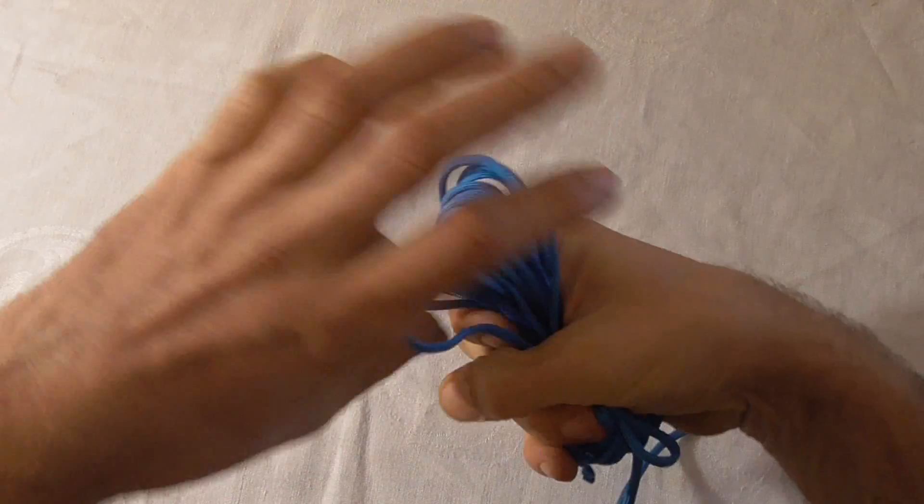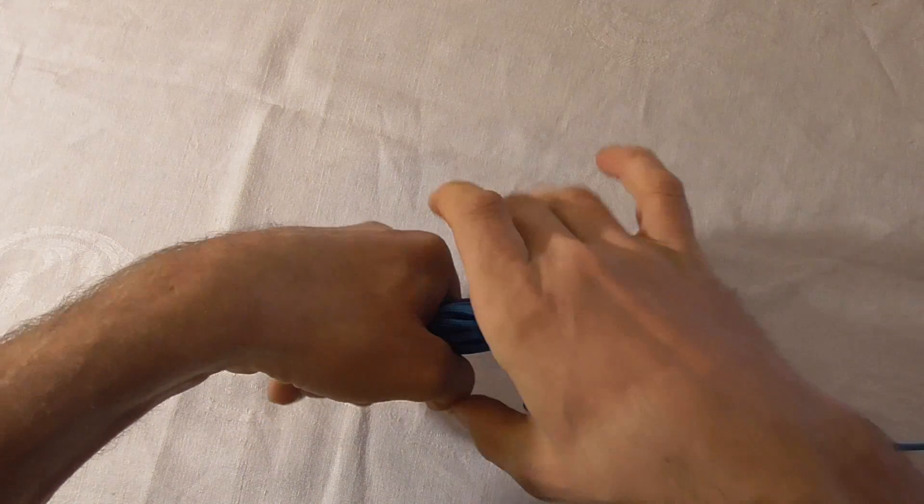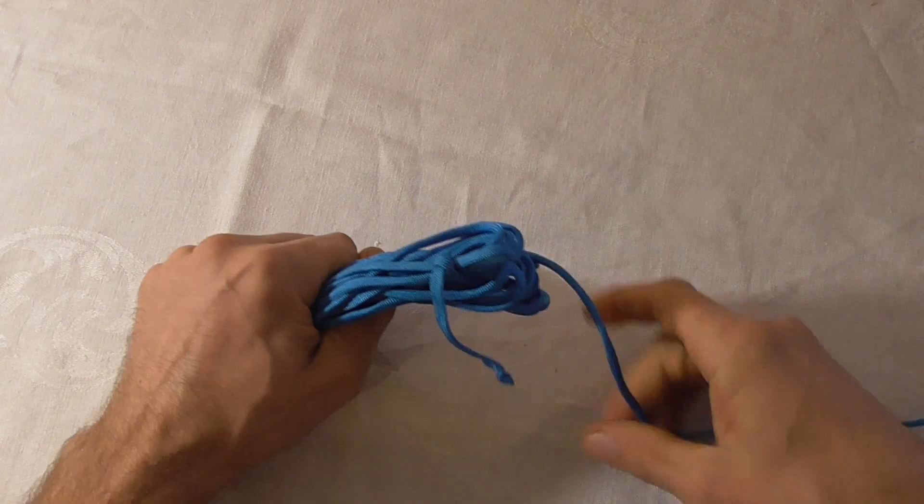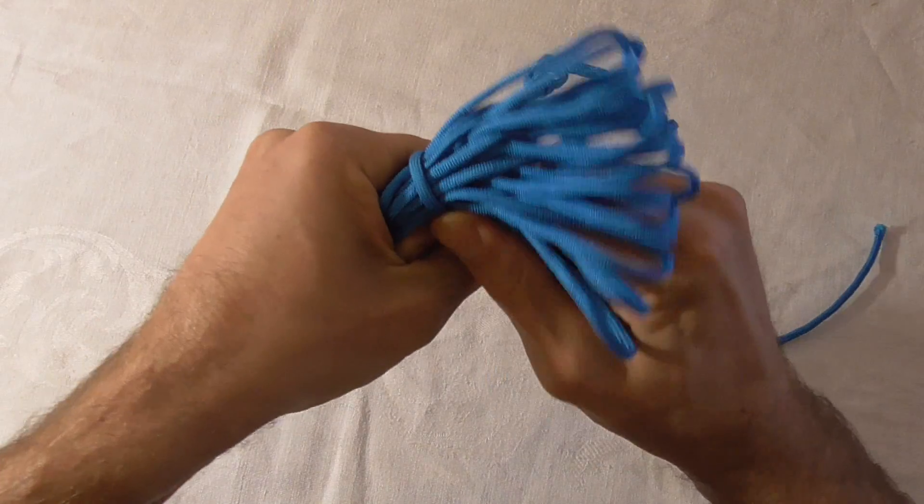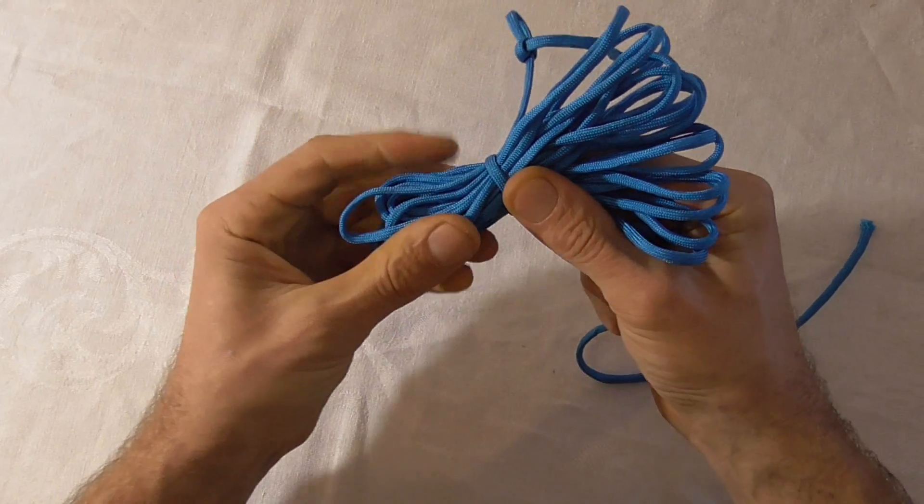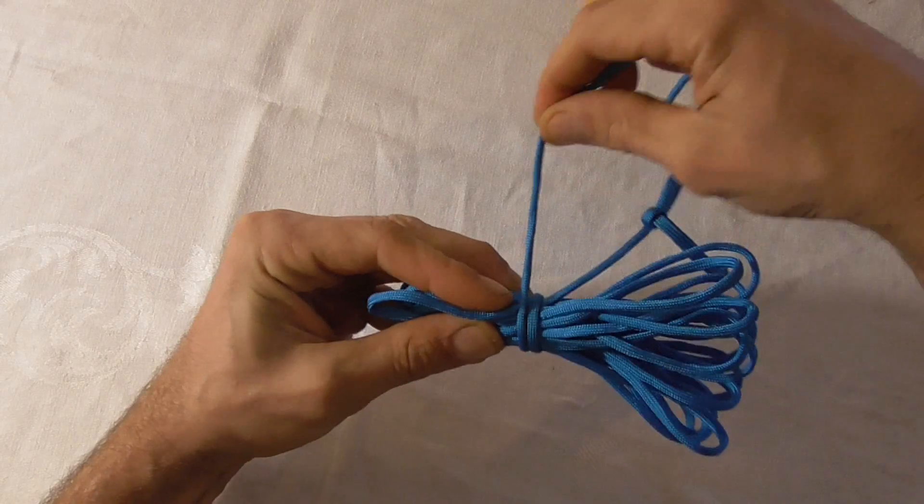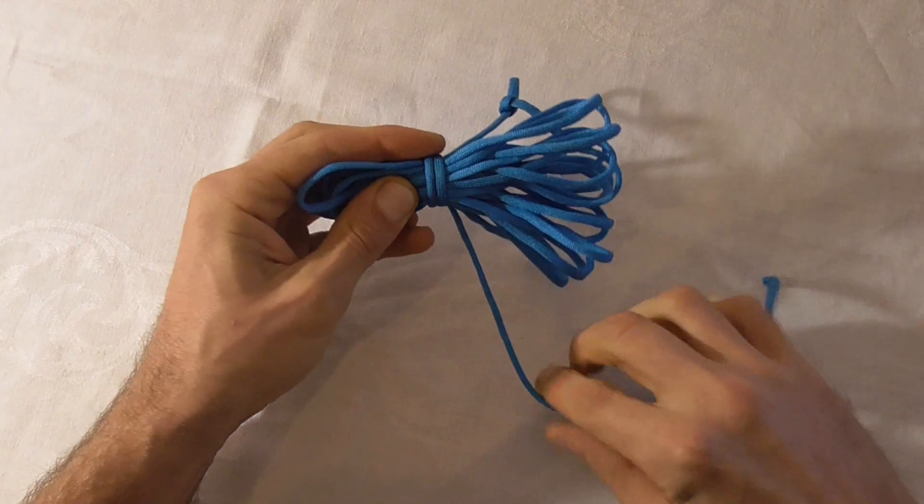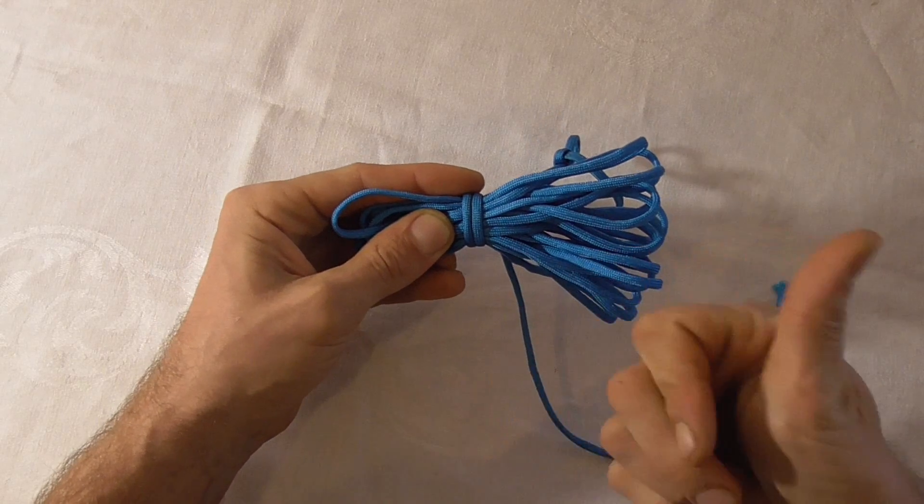I like to keep the loop on top, so I'm just going to rotate this around. Then I'll locate my end and I'm just going to make one wrap around the bundle. And then I'm going to make another wrap in this direction just to lock it in place, and wrap back in this direction here.